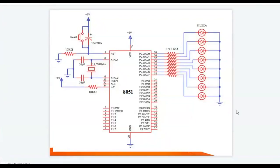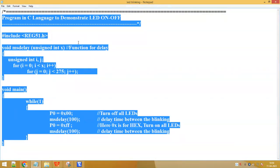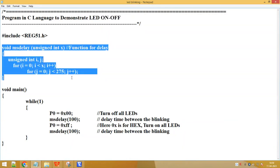Hello and welcome everyone. Today we'll see how to create a project for the 8051 controller in Keil software using embedded C language. The figure shows the interfacing diagram between eight LEDs and the 8051 controller. The 8051 controller consists of four ports: port 0, port 1, port 2, and port 3. This is the embedded C program for LED interfacing, in which we will turn on and off the LEDs.